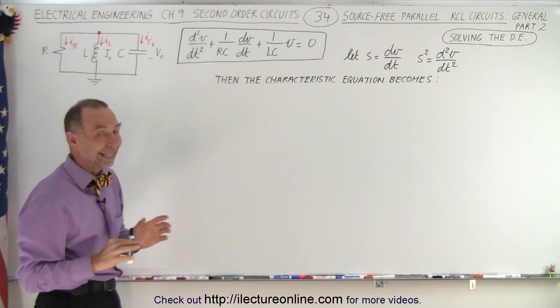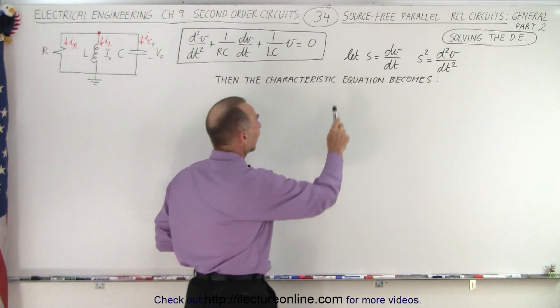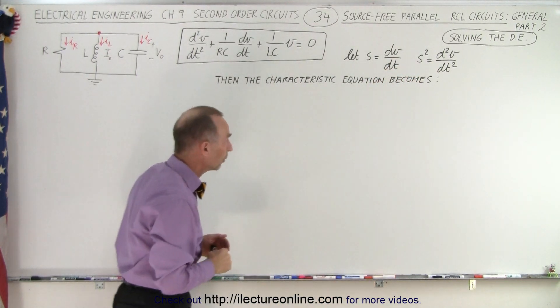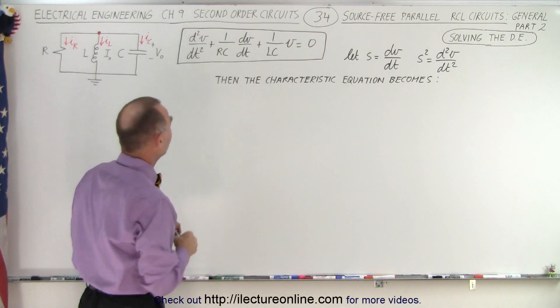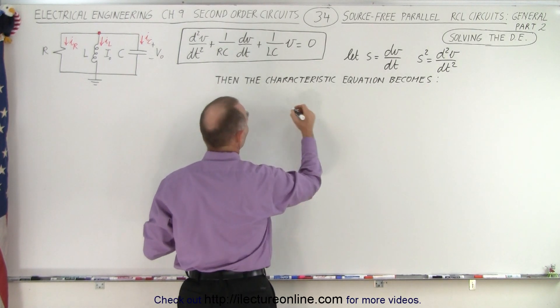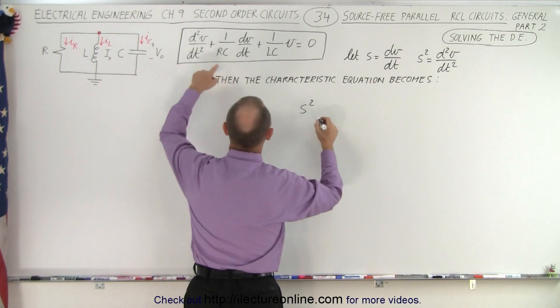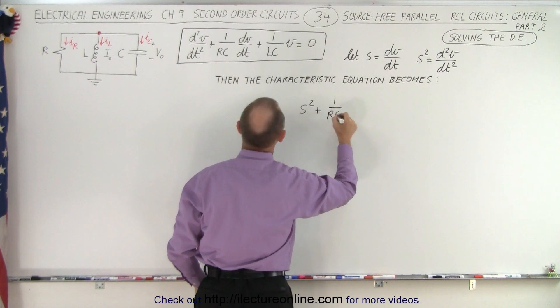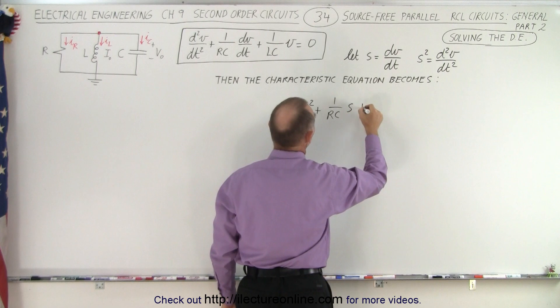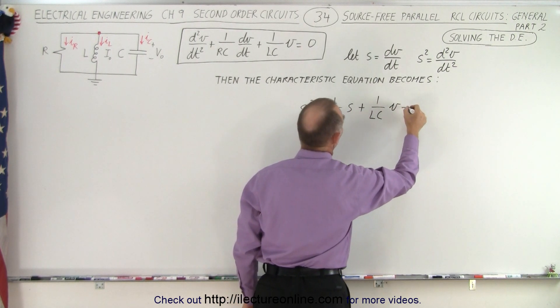So now to solve the equation we want to get the characteristic equation, and we do that by letting S equal dv/dt and S squared equal the second derivative of the voltage with respect to time, and then we make that substitution. So this equation becomes: S squared plus 1 over RC times S, plus 1 over LC times the voltage, which is equal to 0.